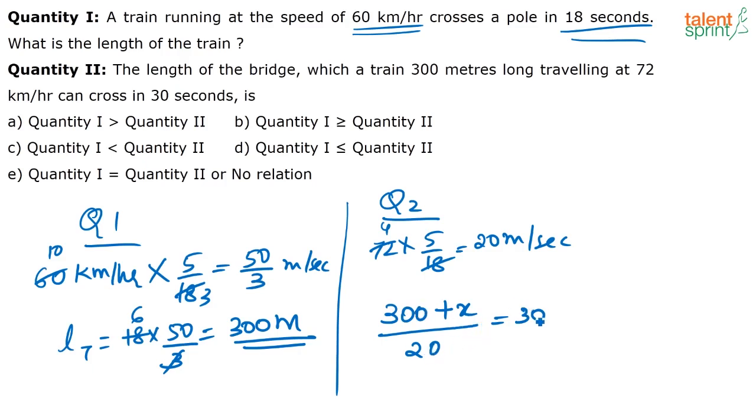So solve for this. What do you get? You have 600, so 600 minus 300. So x will again be equal to 300. So in both cases you get 300 as the answer. So quantity 1 is equal to quantity 2. That is option E.